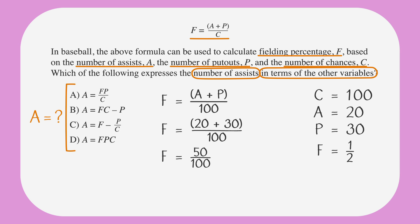Now that we have picked all of our numbers, it's time to go to the answer choices. We'll know we have the correct answer if it works when we plug these four numbers in. Let's start with answer choice A: A equals FP over C. Let's plug our numbers in. A equals 20, F equals one half, P equals 30, and C equals 100. Does that work? Let's do a little arithmetic and find out.